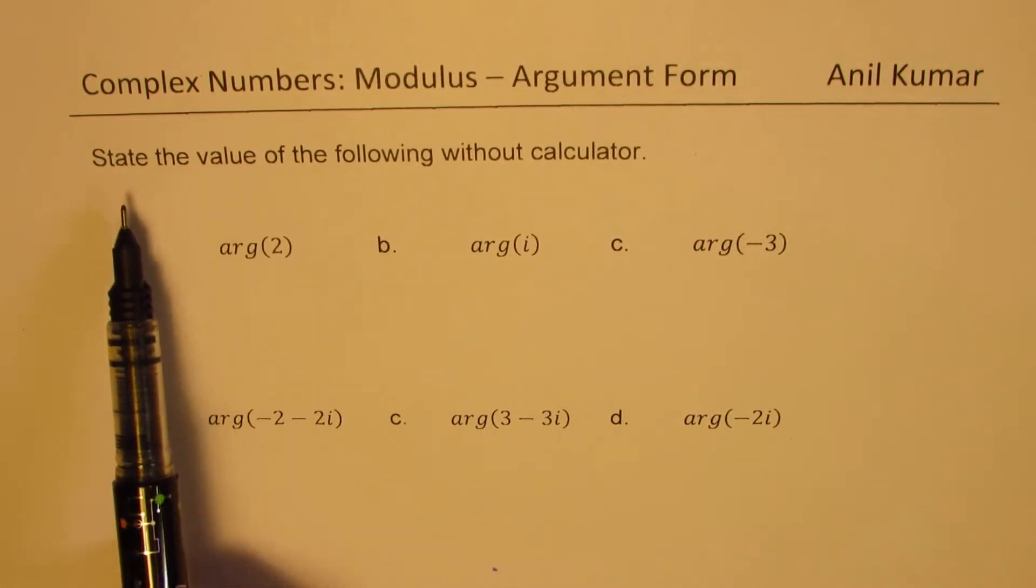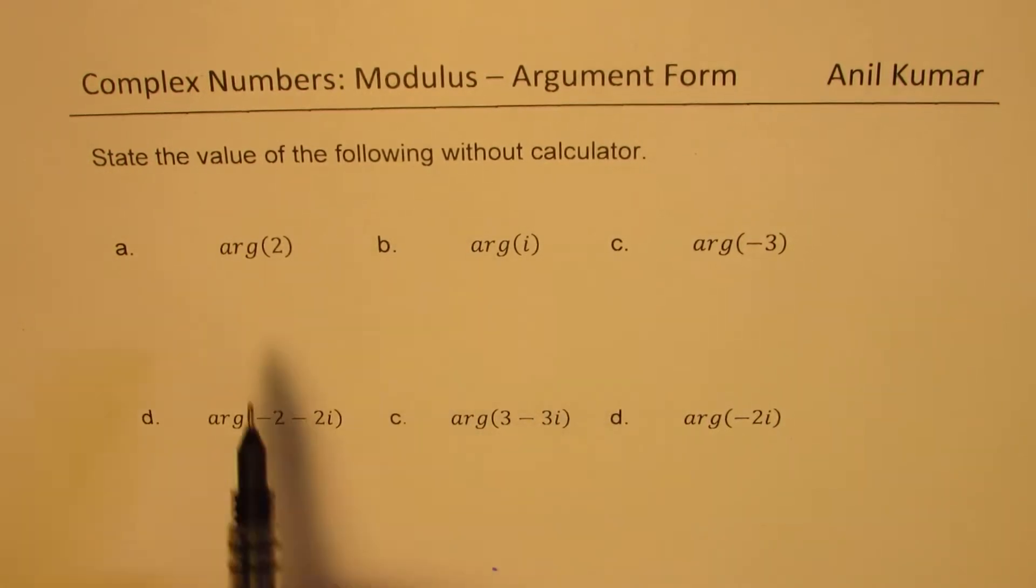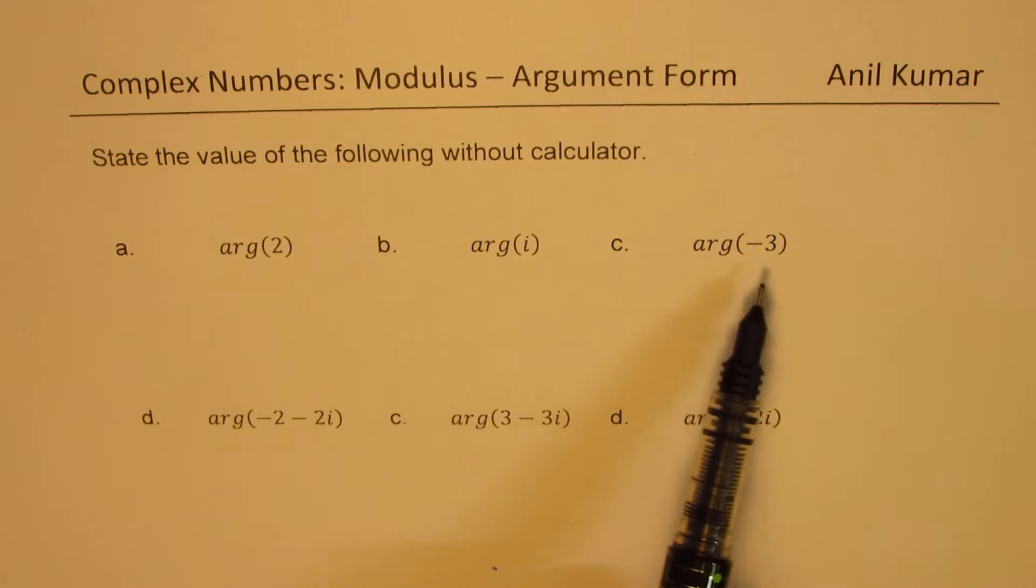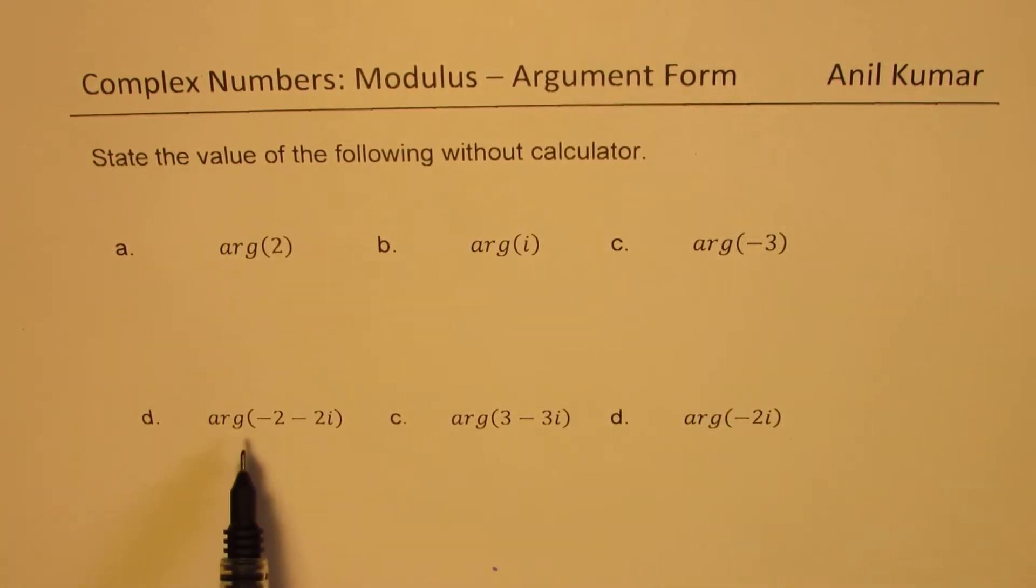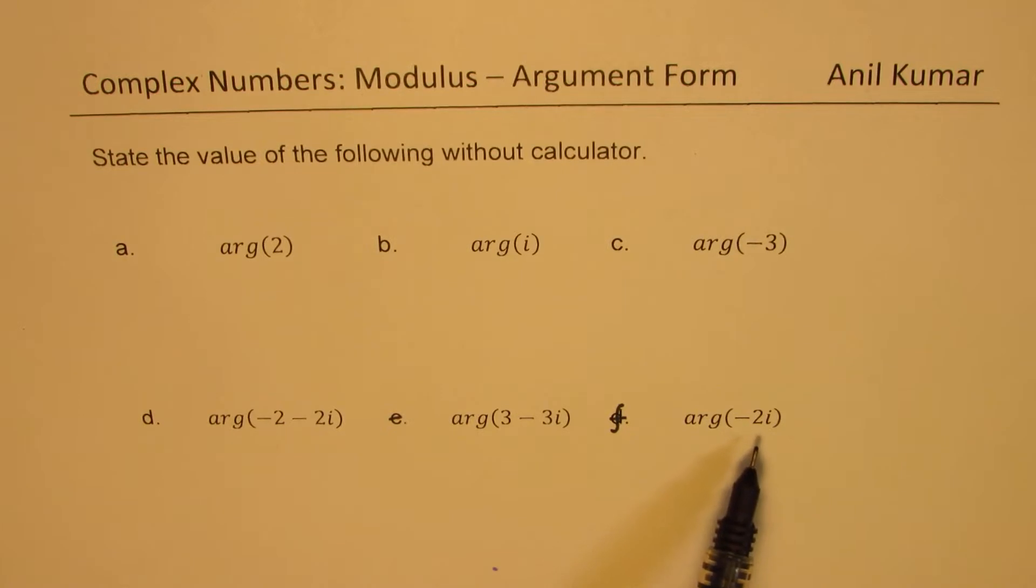So the question for you is: state the value of the following without calculator. So we have six examples: argument 2, argument i, argument minus 3, argument minus 2 minus 2i, argument 3 minus 3i, and argument minus 2i.